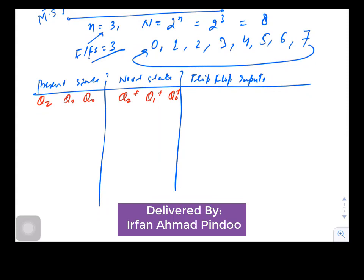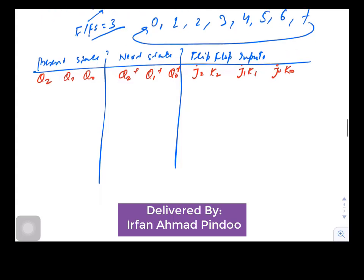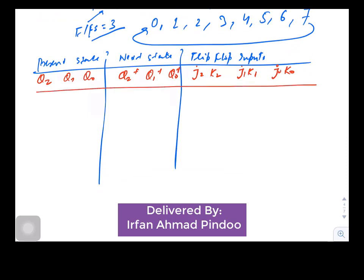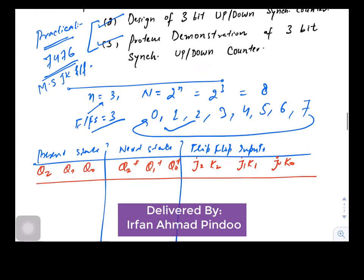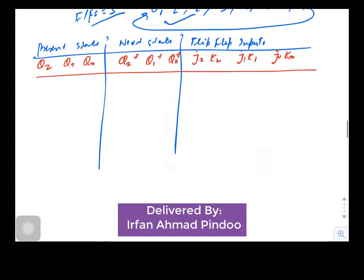So we can write it here: Q2, Q1, Q0, again Q2+, Q1+, Q0+, which represents the next state. And since there are three flip-flops and we are using JK, there must be J2 K2, J1 K1, and J0 K0.